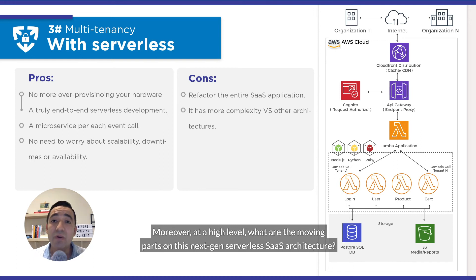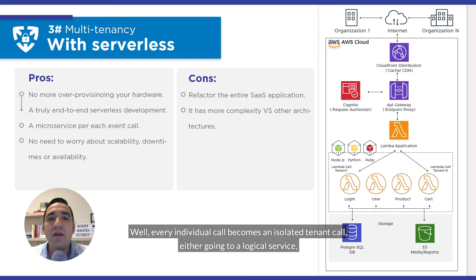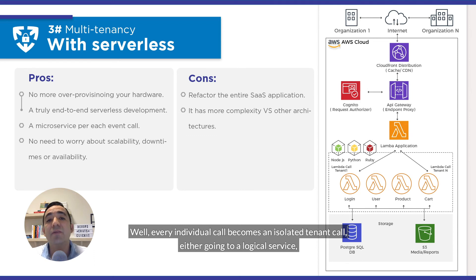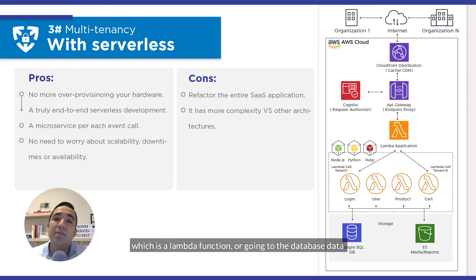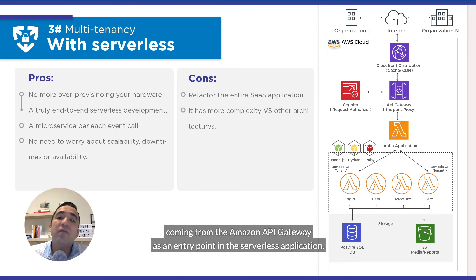Moreover, at a high level, what are the moving parts on this next-gen serverless SaaS architecture? Every individual call becomes an isolated tenant call, either going to a logical service — which is a Lambda function — or going to the database, with data coming from the Amazon API Gateway as an entry point in the serverless application.